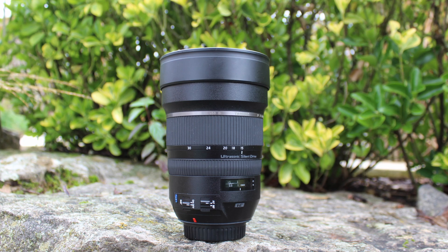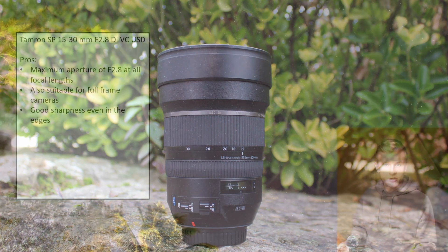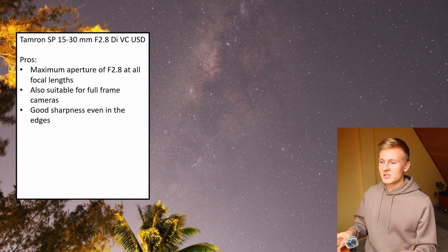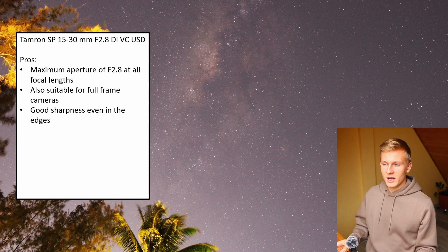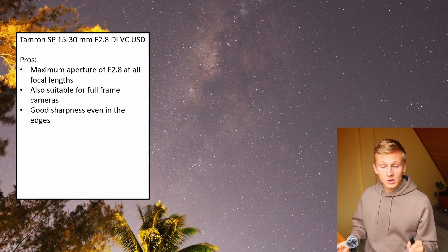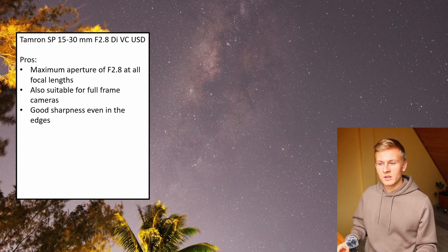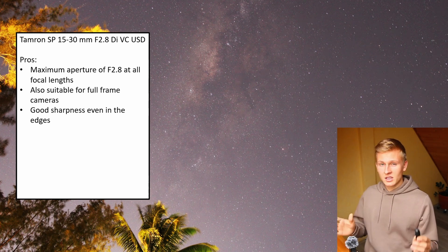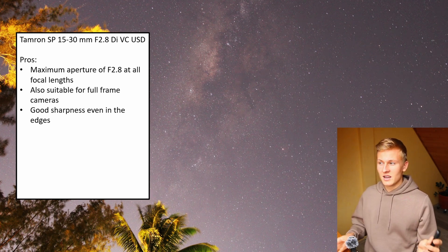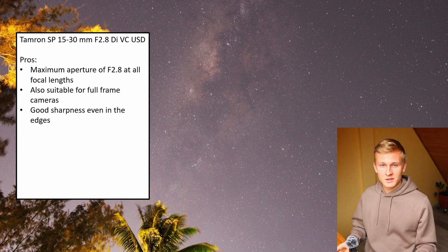This lens has good sharpness even in the corners and edges. I've talked to other people using it for astrophotography and some have problems with sharpness, but in my case I'm really happy with how the images turned out. Even in the edges and corners the image is still very sharp. There may be differences between individual lenses, but I do not have problems with sharpness in the edges.